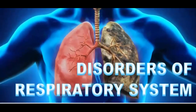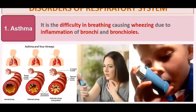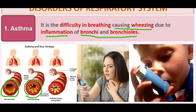Now let us read about some disorders of the respiratory system. The first disorder is asthma. Asthma is difficulty in breathing causing wheezing, due to inflammation of bronchi and bronchioles. If there is inflammation in the bronchioles, proper breathing is not possible, oxygen and carbon dioxide exchange is not proper, and the person feels difficulty in breathing. In asthma patients, the diameter of the bronchi is smaller due to inflammation, reducing lung capacity.